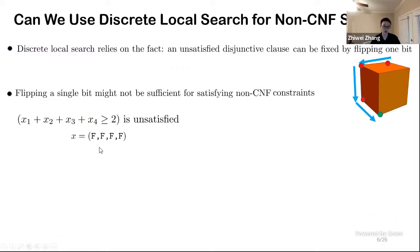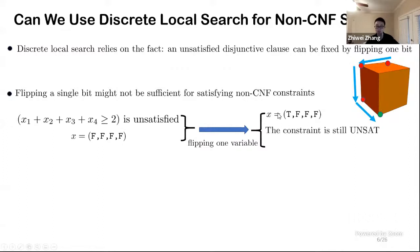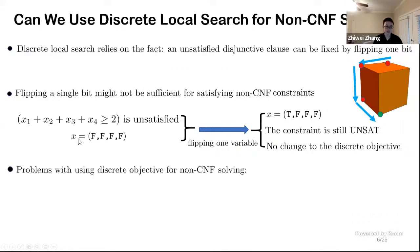Let's see the following example. Here we have a cardinal constraint with four variables, and suppose we start from this all false assignment, now it is unsatisfied. We will try to flip one variable, let's say the first one, to make this new assignment. Now there are two things to notice. The first one is that the constraint is still unsatisfied. The second thing is, the even worse thing is that, if we just use the way we define the discrete objective function in CNF solving, we will see no change to the discrete objective, although we think that we are making some progress because we are closer to satisfying this cardinal constraint.